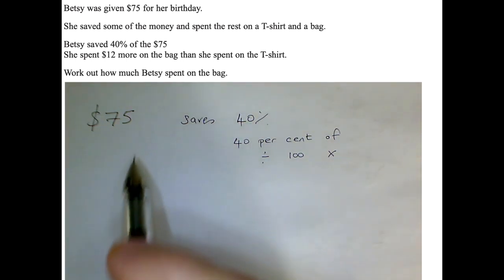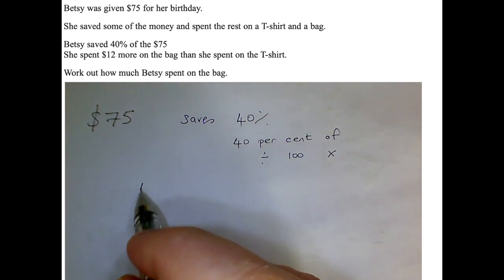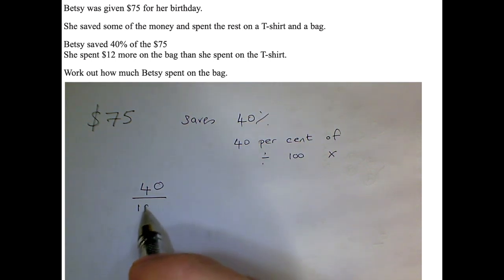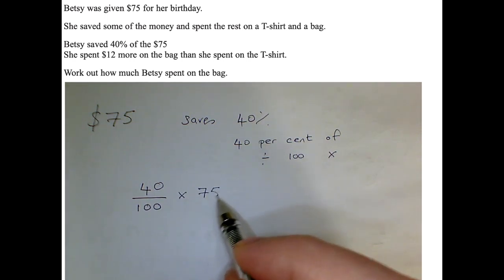So I'm going to do exactly that, 40% of, that means 40% of 75, and that's going to tell me how much money she put in the bank, she's saved.